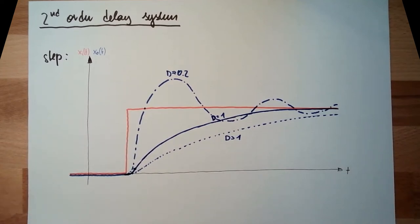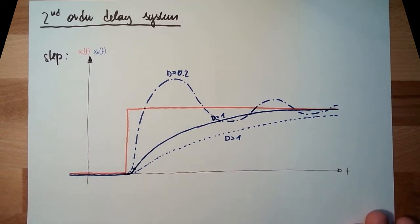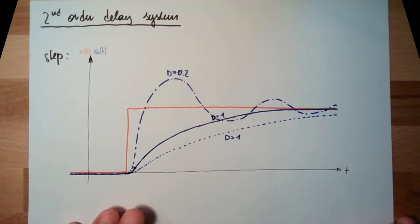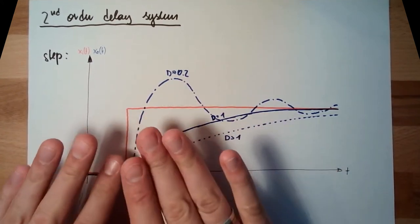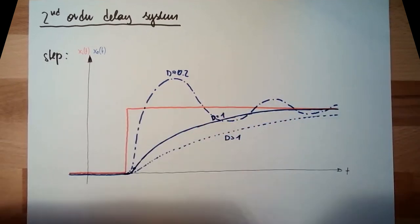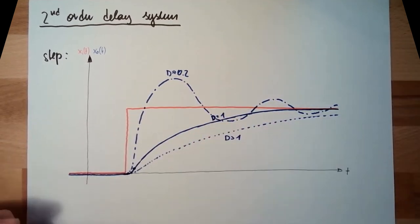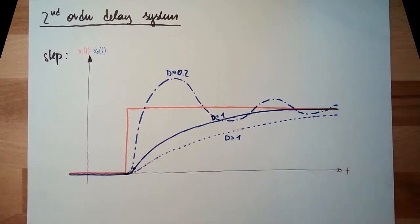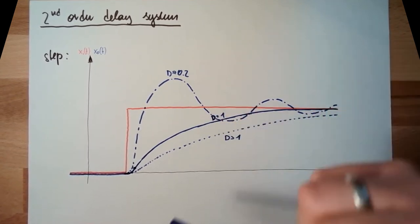One thing which we want to achieve is that our output is almost reaching our input very fast. So we could say, no overshooting, because then our output would maybe be too much. We might measure much more than we actually have to measure. So we use one, it's the aperiodic border case, aperiodischer Grenzfall. It's just not overshooting, that means damping is one.